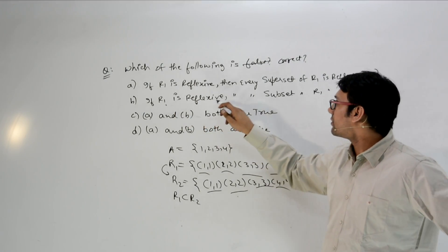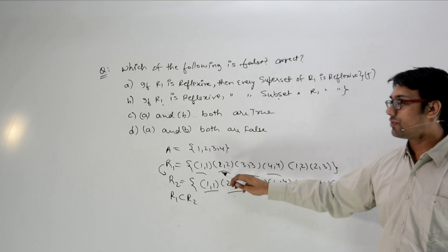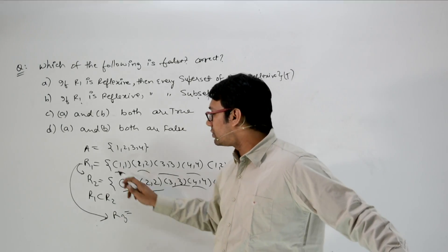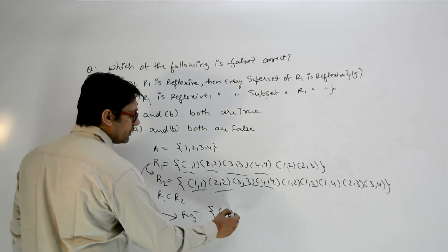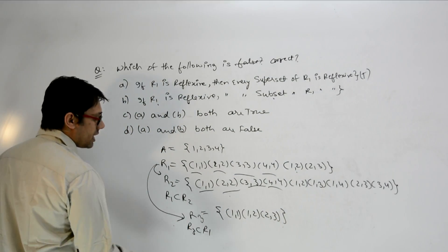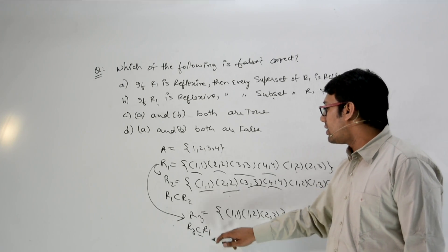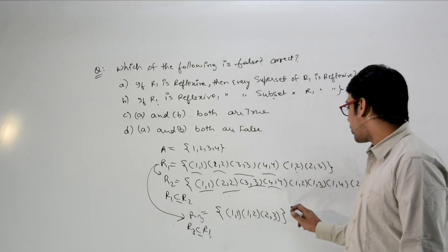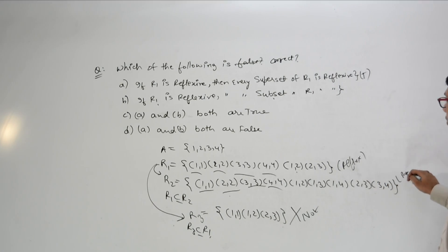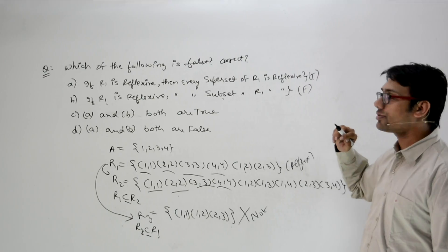Next: if R1 is reflexive, then every subset of R1 is reflexive. R1 contains (1,1), (2,2), (3,3), (4,4), (1,2), and (1,3). We can take a relation R3 which is a proper subset of R1, for example R3 = {(1,1), (1,2), (2,3)}. Clearly R3 is a subset of R1, but R3 is not reflexive because it is missing diagonal elements like (2,2), (3,3), and (4,4). So if R1 is reflexive, every subset of R1 may not be reflexive — this statement is false.